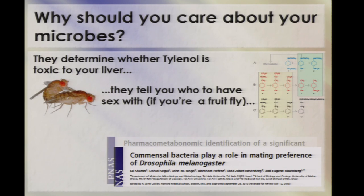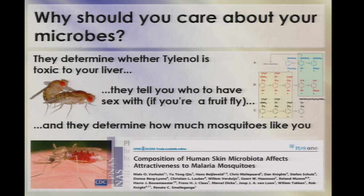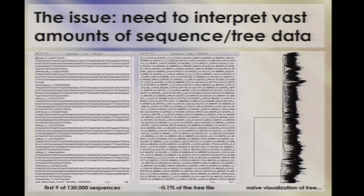In Drosophila, at least, microbes determine mate preferences — this hasn't yet been established in humans, but maybe it's just a matter of time. There's all this exciting gut-brain axis stuff going on. And it turns out that your anecdotal experiences of camping are true: different people really are tenfold differentially attractive to mosquitoes, and what mosquitoes are zooming in on is basically VOCs produced by your skin microbes.